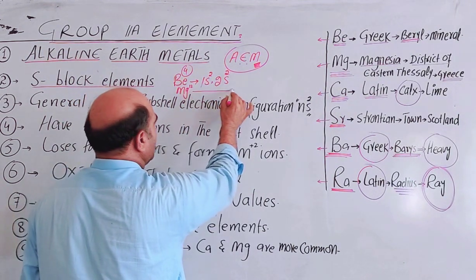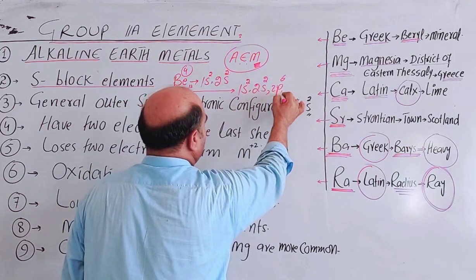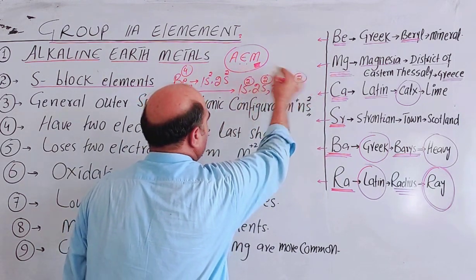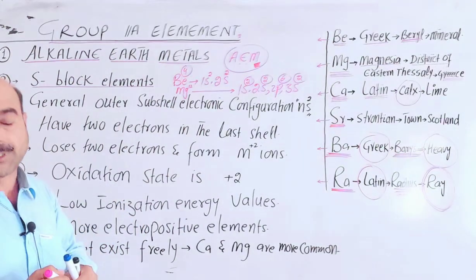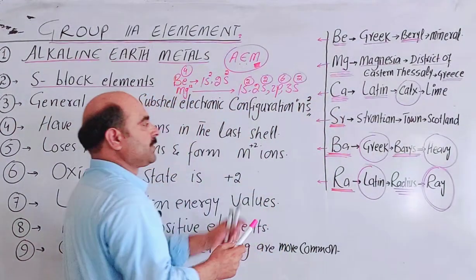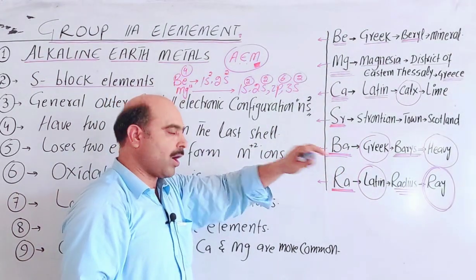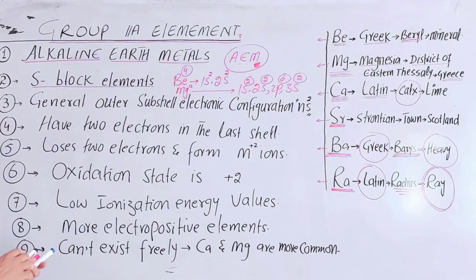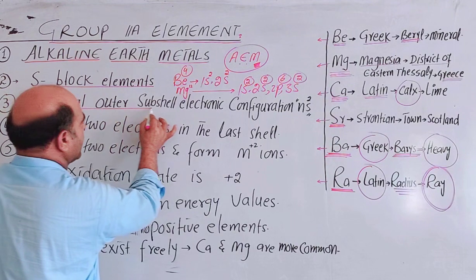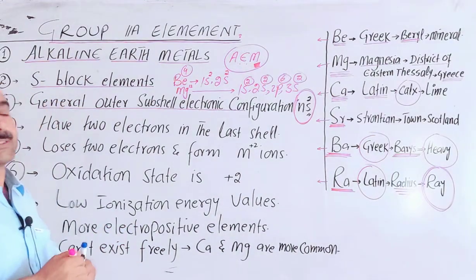For example, magnesium has atomic number 12. Its electronic configuration is 1s², 2s², 2p⁶, 3s². The last electron enters into S sub-shell. For beryllium, it's 1s², 2s². Again, the last electron enters into S sub-shell. These are S-block elements because the last electron enters into S sub-shell.